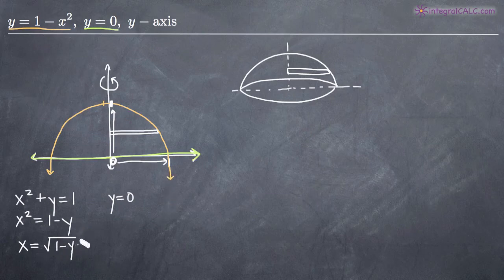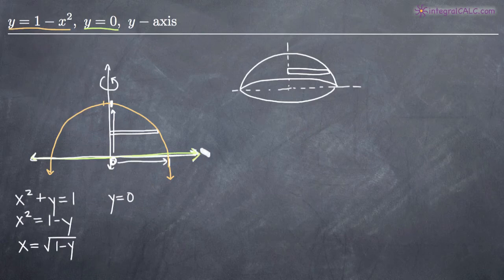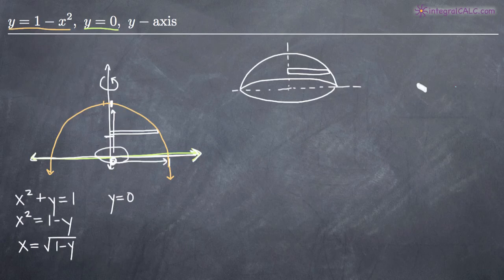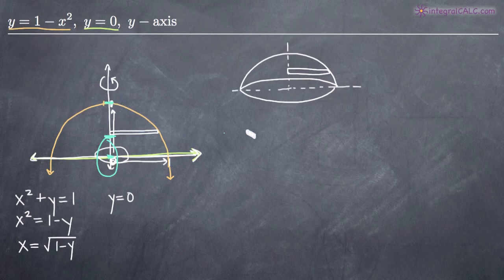We know our limits of integration and our functions in terms of x. When we talk disk and washer method here, there is no washer — this is just going to be a disk. Because we have the line y equals 0 along the x-axis and we're rotating around the y-axis, there's not going to be a hole in the middle. If we were integrating from 1 half to 1 there would be a hole, but because we're integrating from 0 to 1 there is no hole, so there's no washer — just a disk.